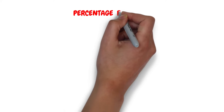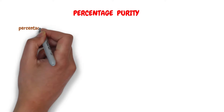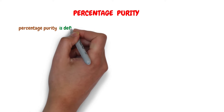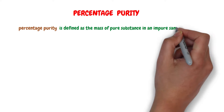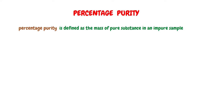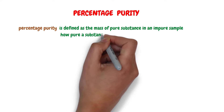This video talks about percentage purity. Percentage purity is defined as the mass of pure substance in an impure sample. Impurities affect the physical and chemical properties of a substance. For instance, the impurities can make drugs toxic or become ineffective. The percentage purity tells us how pure a substance is.